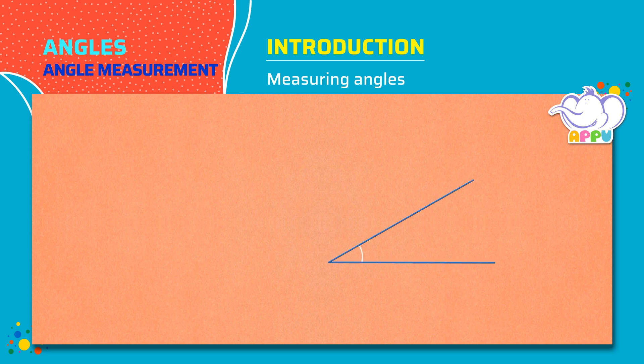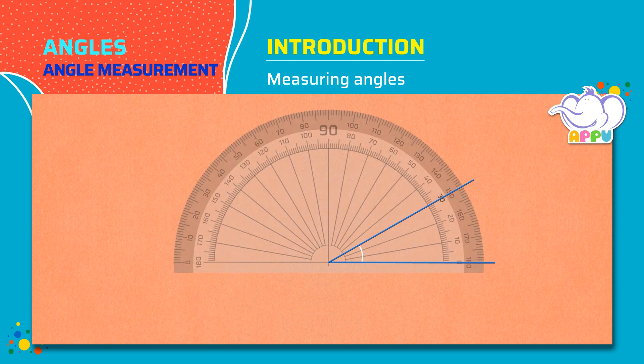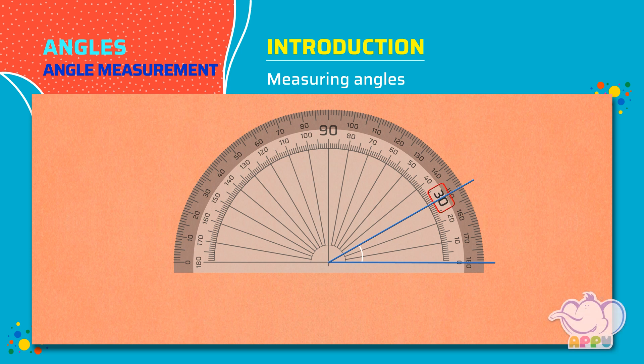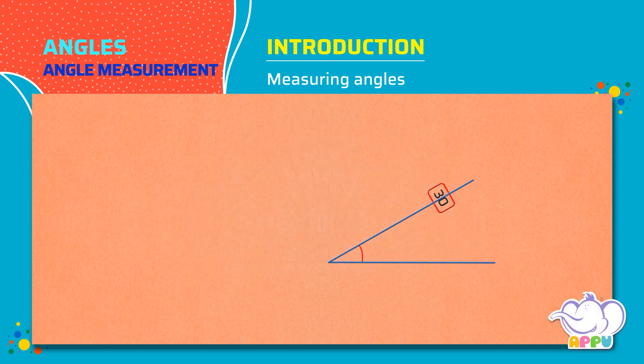Let's measure an angle. Place the midpoint of the protractor on the vertex of the angle. Line up one side of the angle with the zero line of the protractor. We see that the number on the protractor corresponds to 30. So the angle here is 30 degrees.